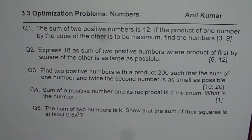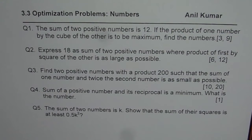Question number 3: find 2 positive numbers with a product of 200 such that the sum of one number and twice the second number is as small as possible. The answer is 10 and 20.